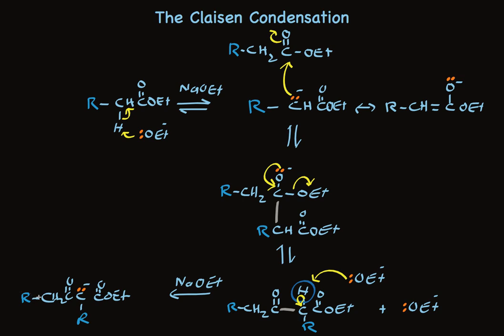When the reaction is completely done, in a final step, acid is added. This carbon is reprotonated. And then ultimately, we make the beta-ketoester itself.